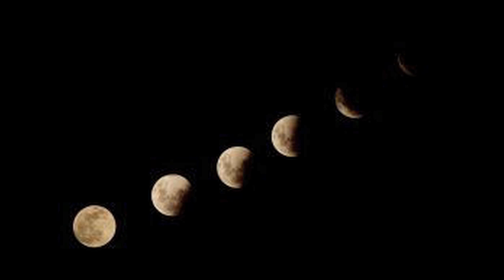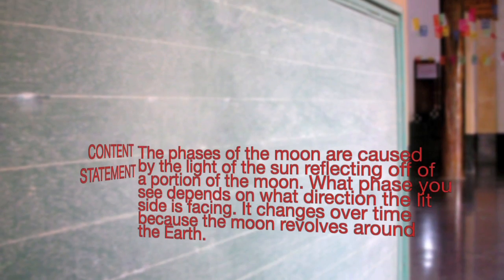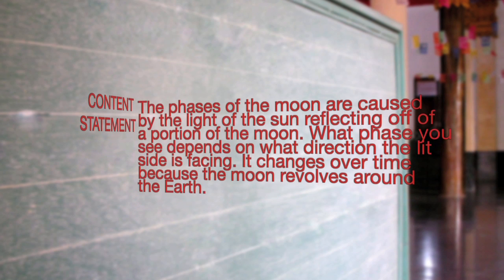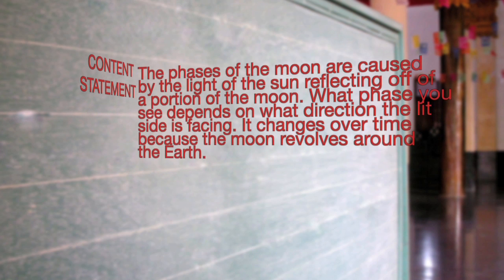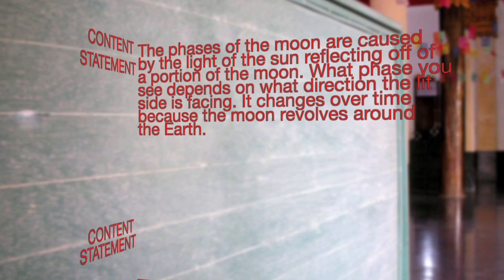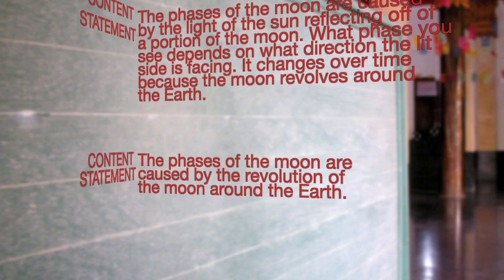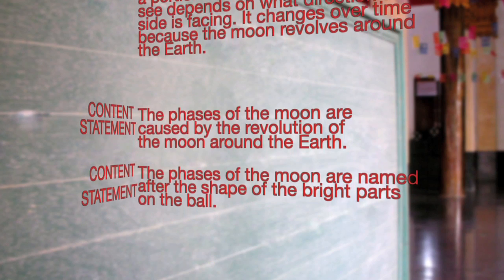Now that you understand how the activity relates to the lunar calendar, let's come up with a few content statements. The phases of the moon are caused by the light of the sun reflecting off of a portion of the moon. What phase you see depends on what direction the lit side is facing. It changes over time because the moon revolves around the Earth. The phases of the moon are caused by the revolution of the moon around the Earth.